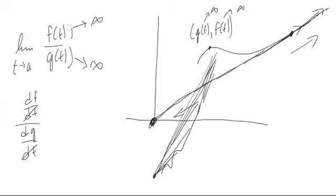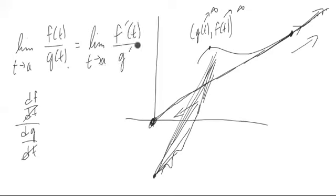So again we can do this, that this limit of this fraction is simply equal to the limit as t approaches a of f prime of t over g prime of t.